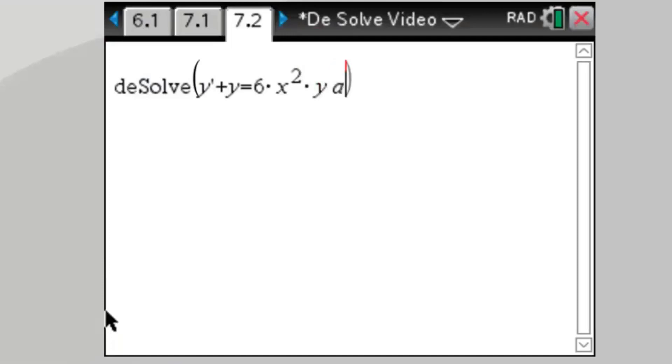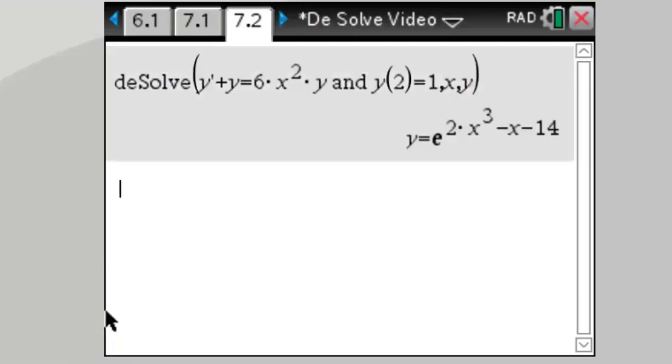So let's type in the word and, making sure we've got a space either side of it, typing in the initial condition y of 2 equals 1, comma x, comma y. So this gives me the solution y equals e to the (2x³ - x - 14).